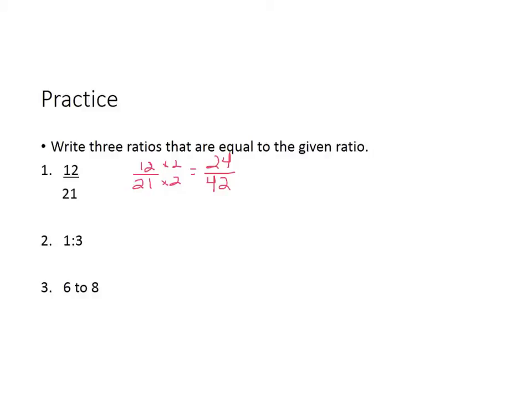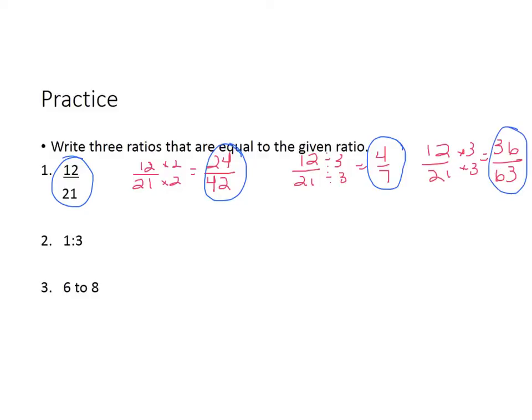You can also divide. If we take 12 over 21 and divide them both by 3, we would get 4 over 7. That's another equivalent ratio. We could also take 12 over 21, take them both times 3. And in that case we would get 36 over 63. So in this case, 12 over 21, 24 over 42, 4 over 7, and 36 over 63 are all equal ratios to each other.